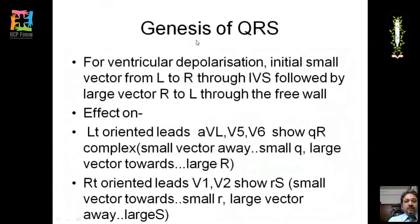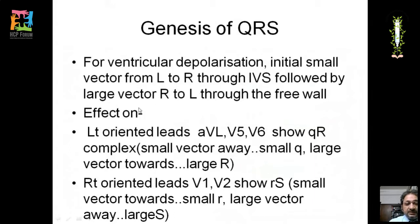During ventricular depolarization, the initial small vector goes from left to right through the interventricular septum, followed by a larger vector from right to left through the free wall. For left-sided leads (AVL, V5, V6), the small leftward vector moves away, producing a small Q wave, and the larger vector toward these leads produces a large R wave, giving a QR pattern.